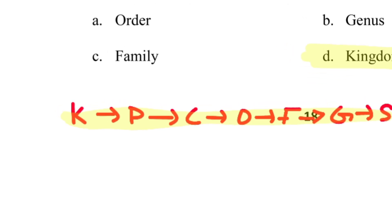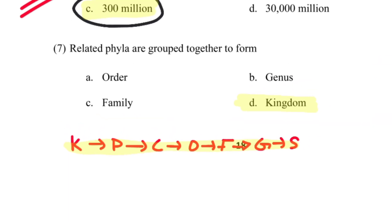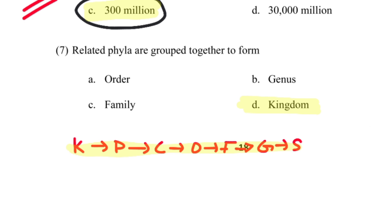Next question on taxonomic classification: The levels are Kingdom, Phylum, Class, Order, Family, Genus, and Species. The question asks which group related files are grouped together in. The correct answer is option D — Kingdom.